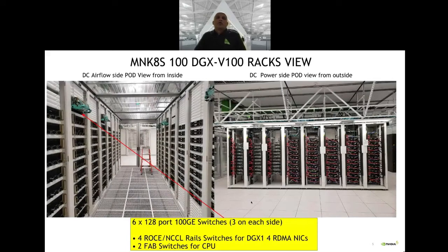This picture shows two images: the left image is inside the hardware power cluster, showing perforations on the floor where airflow comes out. The right side picture is the back side — the power side — where heat exits the data center. There are six switches, each with 128 ports and 100 Gbps. There are four rings, with two used for uplinks to carry north-south traffic.